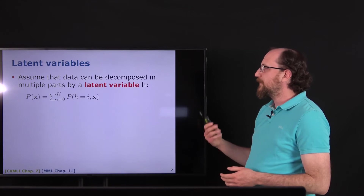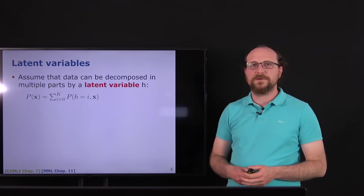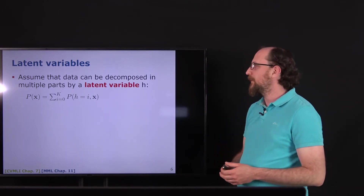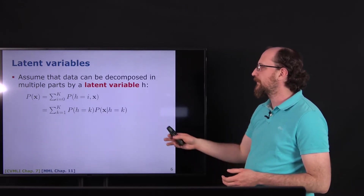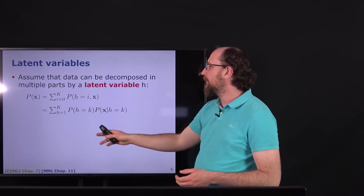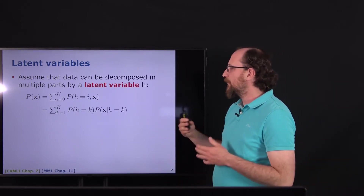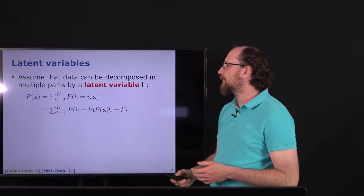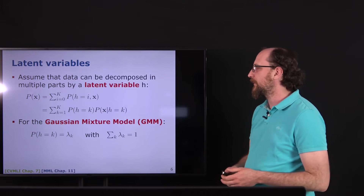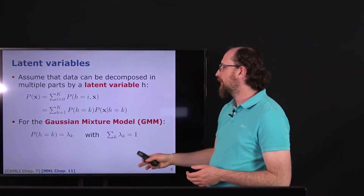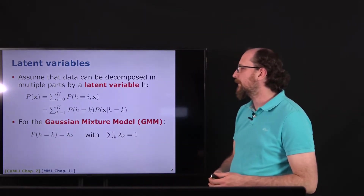The latent variable is something we use inside the model but cannot directly fit from the data — it differs from the usual optimization. When we write the joint distribution as conditionals, we split it so we have a probabilistic model over the hidden variable (a categorical distribution) and p(x|h). For the Gaussian Mixture Model, we have multiple Gaussians — hence a mixture — and we assume p(h) is a categorical distribution. The lambda_k values must sum to one to form a valid probability distribution and are always positive.